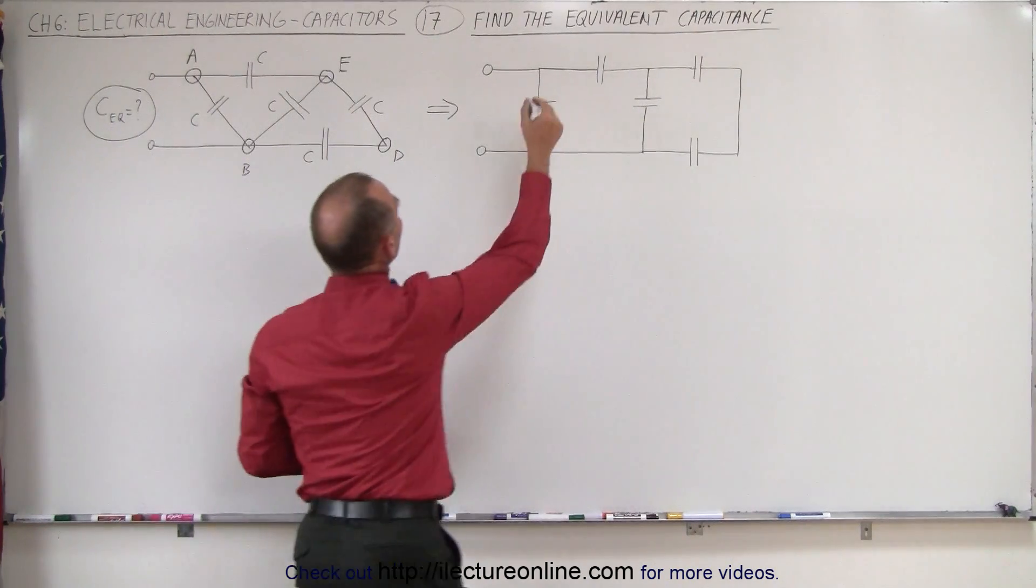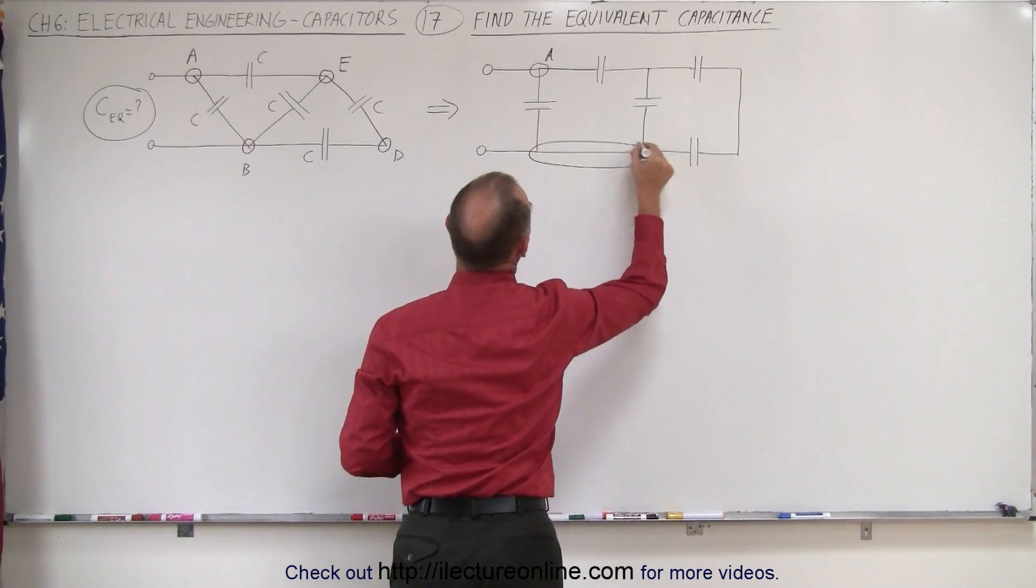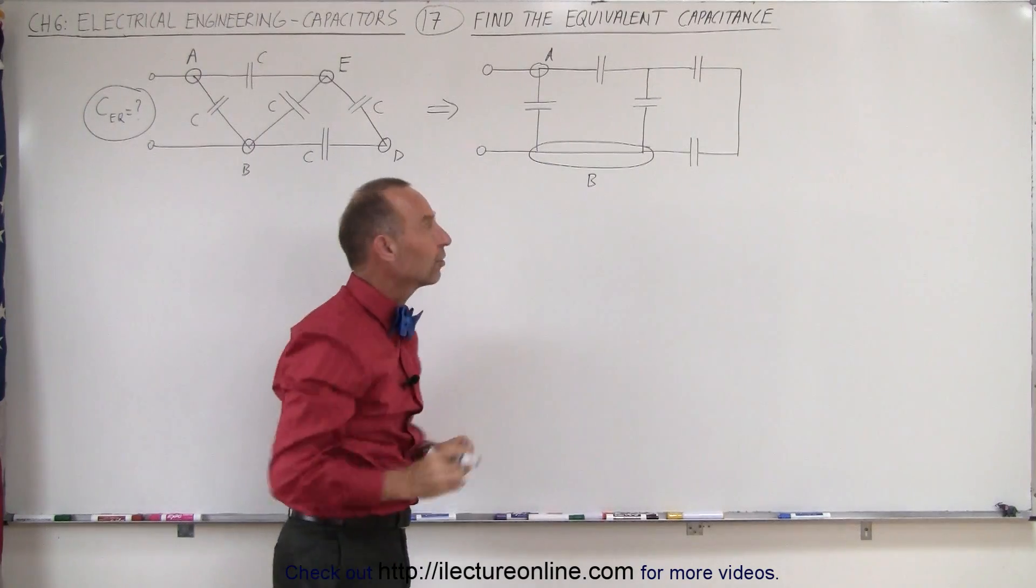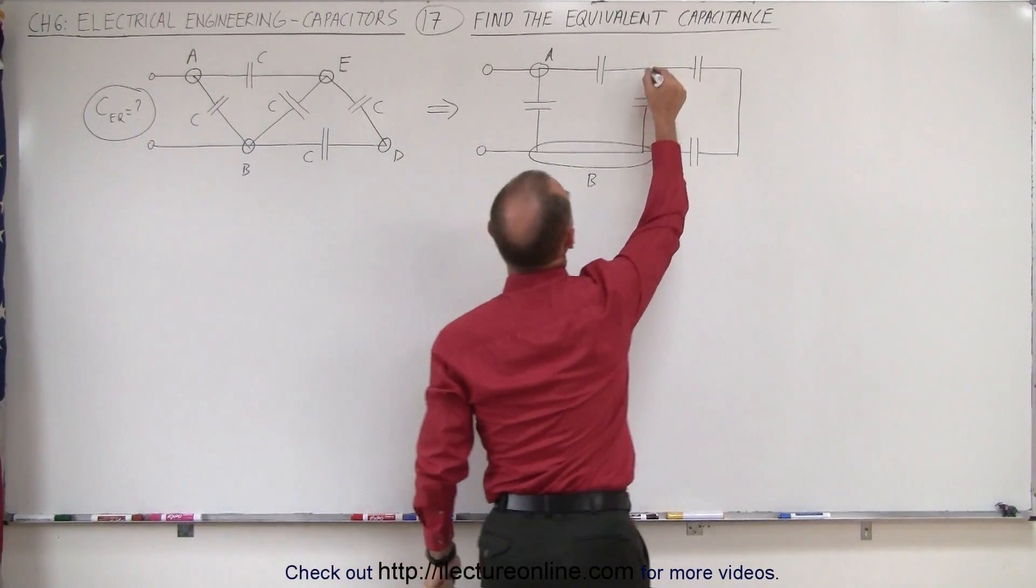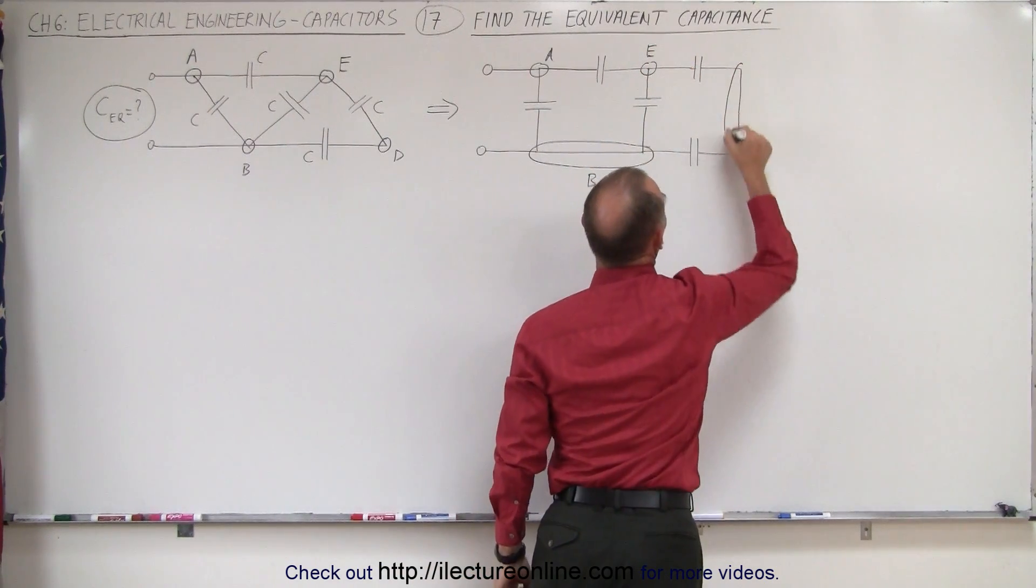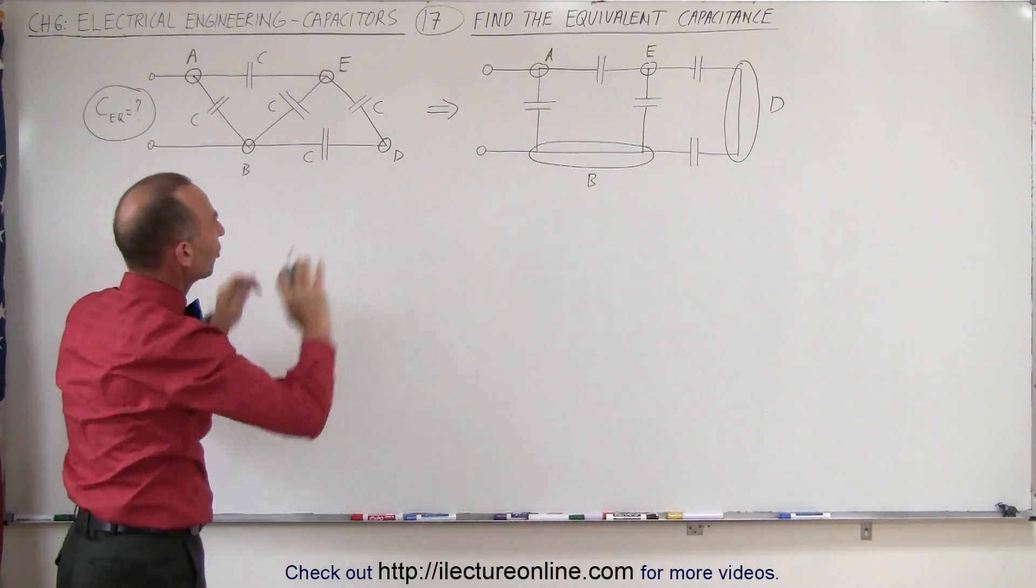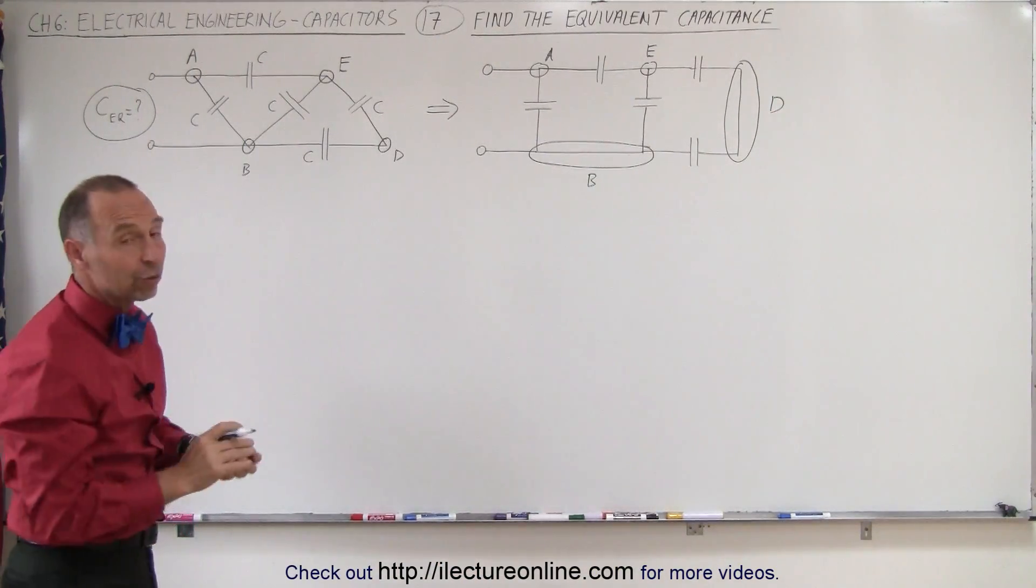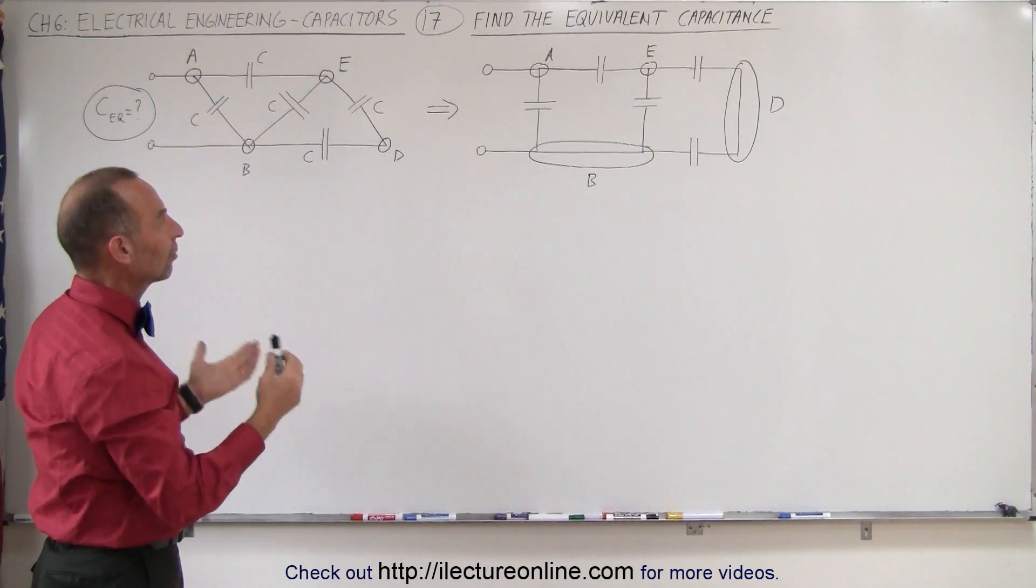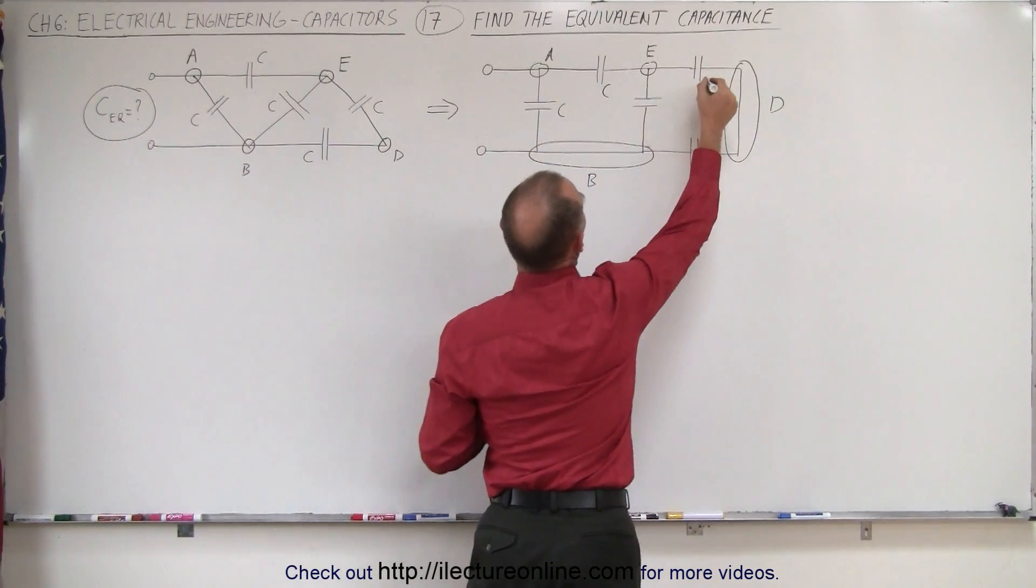A is still over here. B now becomes this entire portion, but that's really like it's one junction. There's no devices in between, so you can think of that as one point on the circuit. E is this point right here. And D is really this section right here. Again, it was not a junction, but at least you can see where the equivalent position is on the circuit. So nothing has really changed, but now when we look at that circuit, it's a lot easier to figure out how to simplify the capacitors. These are still all capacitance C.